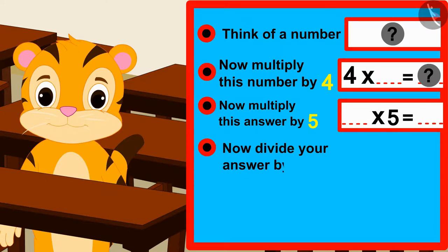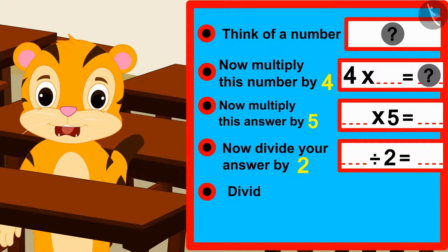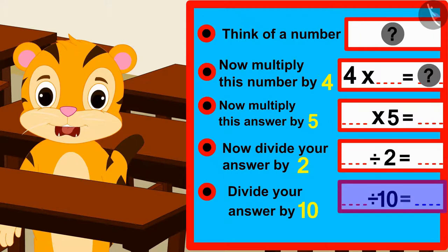Now at the end, if you divide your answer by ten, you will find your previously thought number only. Isn't this some interesting magic of mathematics?